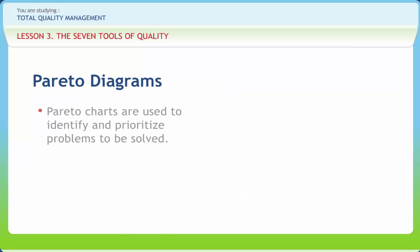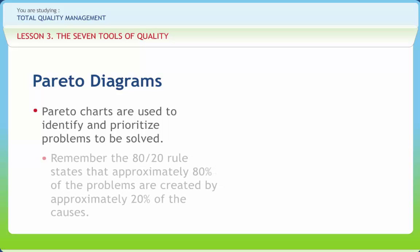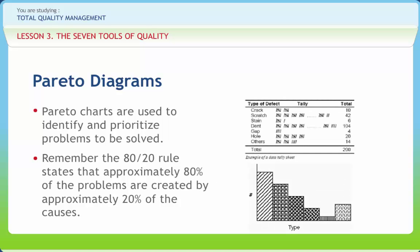Pareto charts are used to identify and prioritize problems to be solved. They are actually histograms aided by the 80 by 20 rule adapted by Joseph Juran. Remember the 80 by 20 rule states that approximately 80% of the problems are created by approximately 20% of the causes. This is the economic concept that Juran applied to quality problems. The meaning behind the 80 by 20 rule is that there are vital few causes that create the problems.